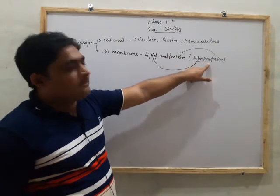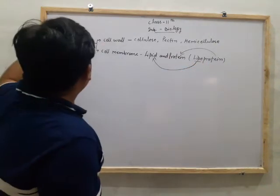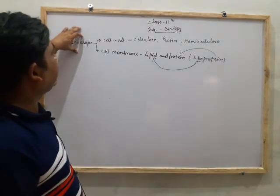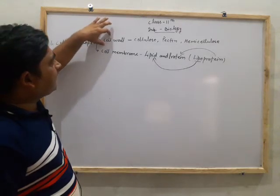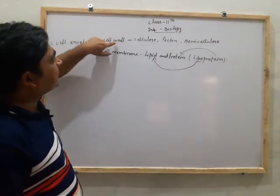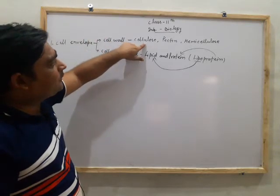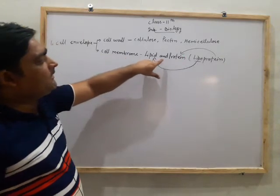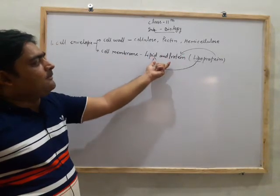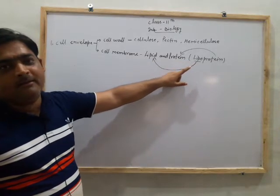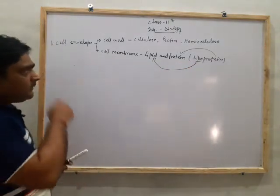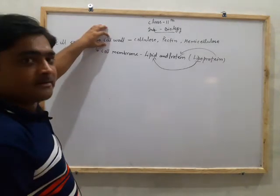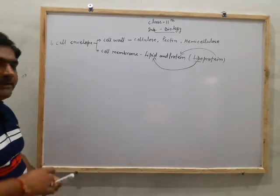So the cell envelope — also called the cell covering — has two parts: one is the cell wall, which is the outermost part and consists of cellulose, pectin, and hemicellulose; and the cell membrane, which consists of lipid and protein, commonly called lipoprotein. The cell wall is not elastic, but the cell membrane is elastic.